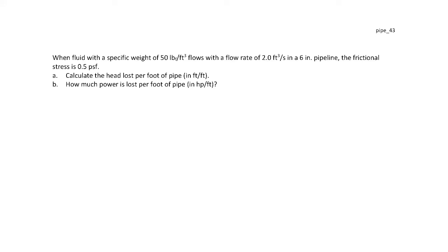We have a fluid with a specific weight of 50 pounds force per cubic foot, flowing with a flow rate of 2 cubic feet per second in a 6 inch diameter pipeline. Under those conditions, the frictional stress is 0.5 pounds force per square foot. We're asked to find the head loss per foot of pipe (feet per feet) and how much power is lost per foot of pipe (horsepower per foot).